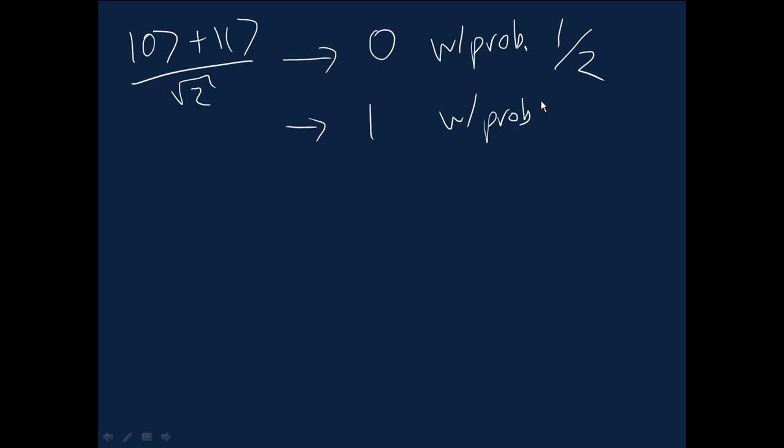And you get the outcome 1 with probability also the square of the amplitude, 1 over root 2 squared is 1 half. And the posterior states are, of course, the 0 computational basis state and the 1 computational basis state. Okay, very simple example.